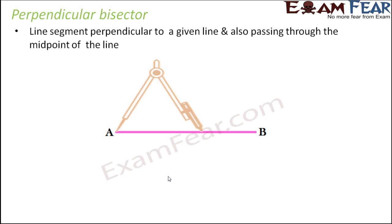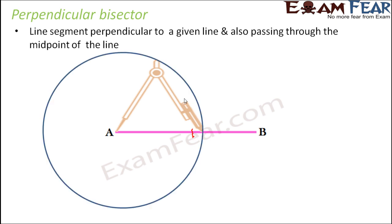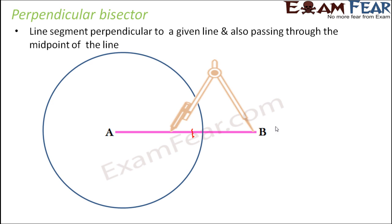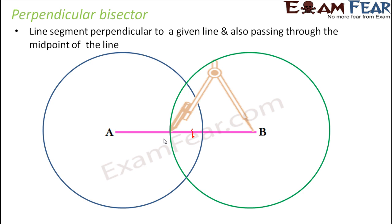We take a compass, consider A as the center, and set the radius slightly greater than half the length of AB. With this radius, draw an arc. Then repeat the same for B — keeping the radius slightly more than half the length of AB — and draw another arc.